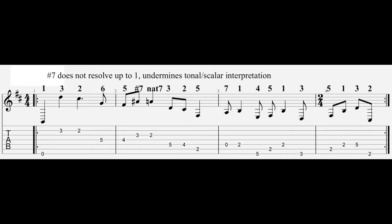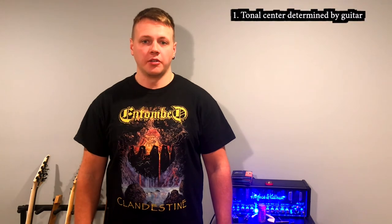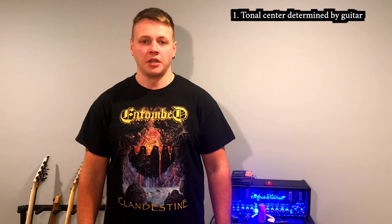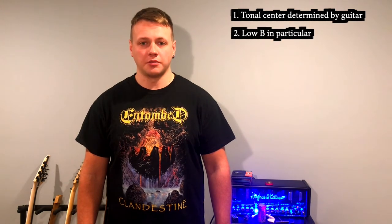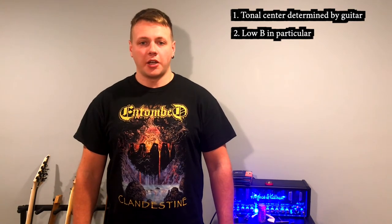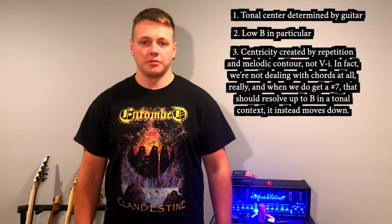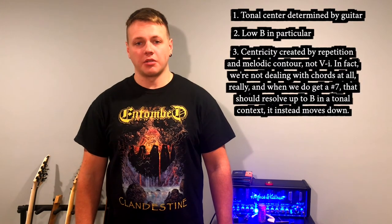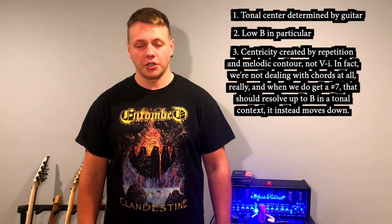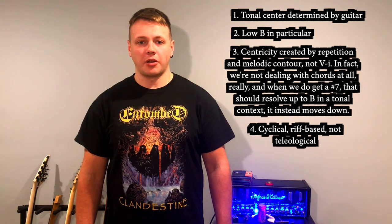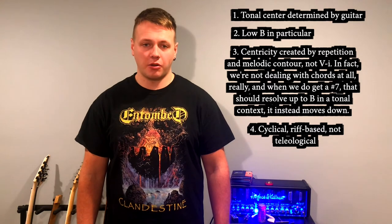A relatively standard tonal harmonic analysis would probably call this an embellished B minor scale. It's clear that B is the tonal center of this riff — it's the pitch we keep returning to. However, calling this an embellished B minor scale misses several important things. First, the tonal center is strongly determined by the tuning of the guitar. Second, it is specifically the low B that is the tonal center — higher ones, when they show up later in the riff, aren't given the same weight. Third, the importance of the low B is established by repetition and a general downward melodic tendency, not from dominant tectonic chordal motion.